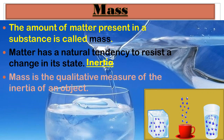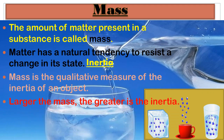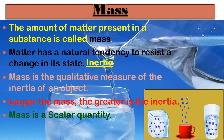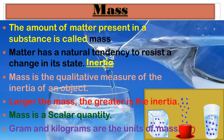Mass is a quantitative measure of the inertia of an object. Mass is a scalar quantity because it has only magnitude, not direction. Mass of an object does not change from place to place — it remains constant anywhere in the world, whether on one planet or another. Gram and kilogram are the units of mass.